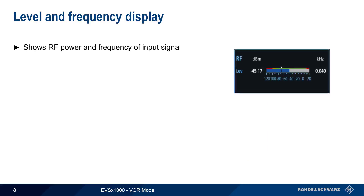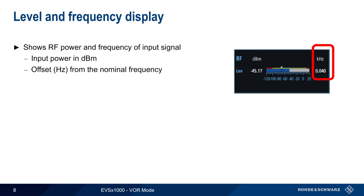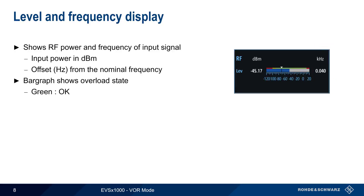The Level and Frequency Display shows the power and frequency of the input signal, with power shown as an absolute value in dBm and frequency shown as an offset in hertz from the nominal or configured VOR frequency. The bar graph shows the overload state: green means no overload, yellow indicates an approaching overload, and red indicates that overload is occurring.